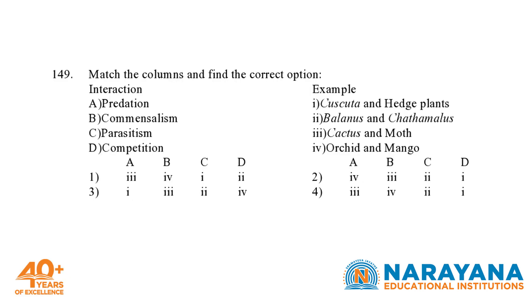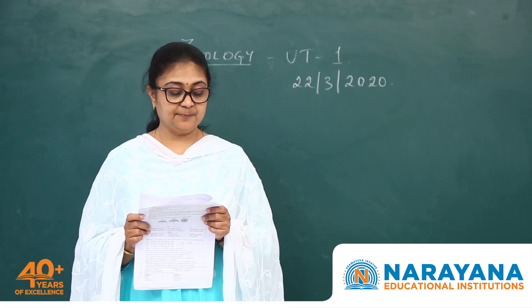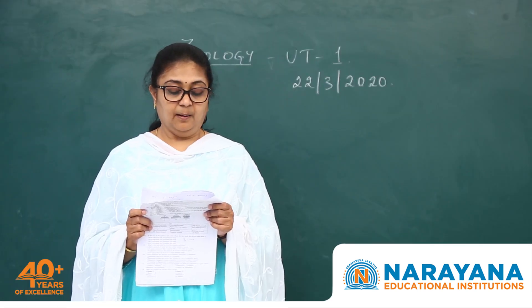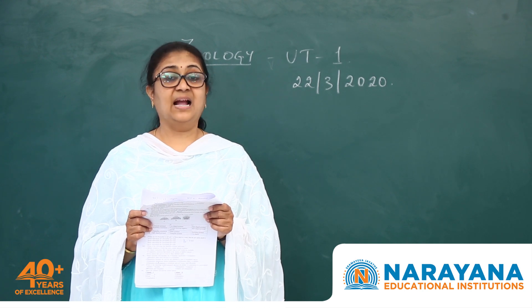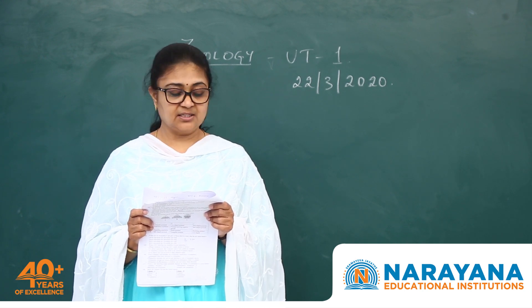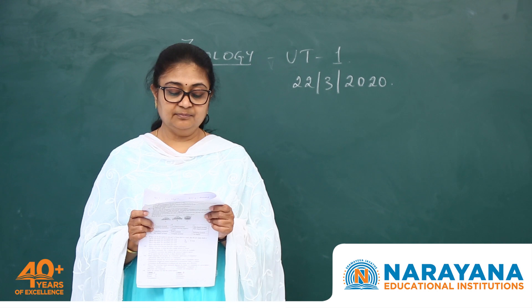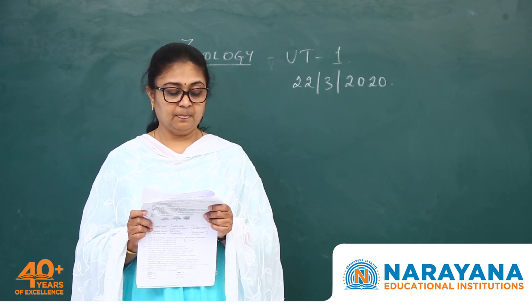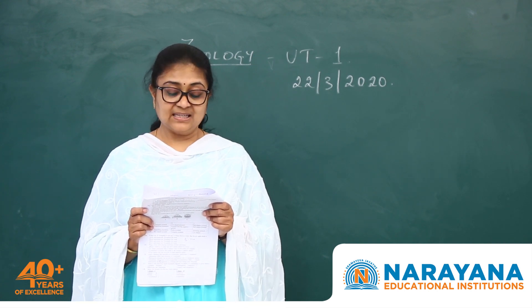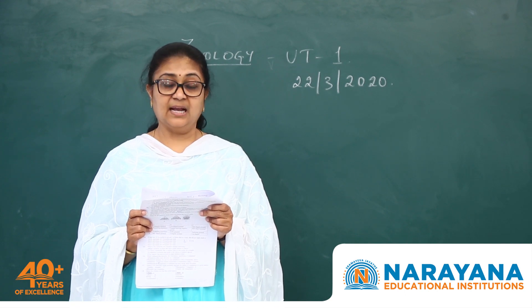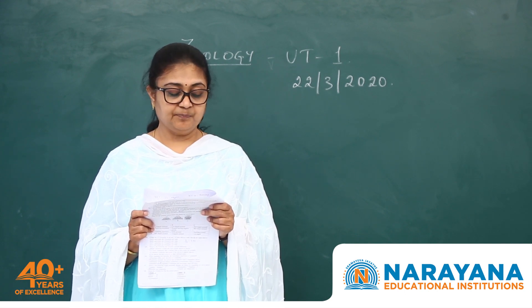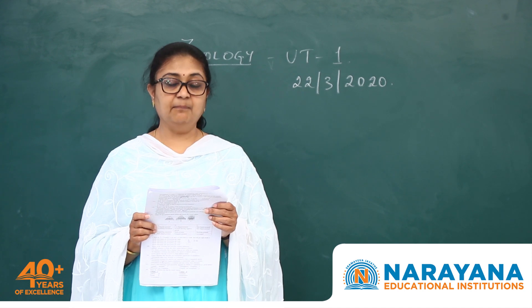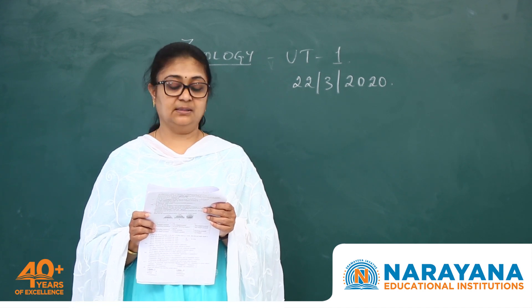Question 149 is again a match-the-following question. In the first column we have interactions and in the second, examples. Predation is exemplified by cactus and moth. Commensalism is exemplified by orchid and mango. Parasitism is exemplified by Cuscuta on hedge plants. Competition is exemplified by Balanus and Chthamalus, the barnacles. So option 1 correctly matches.